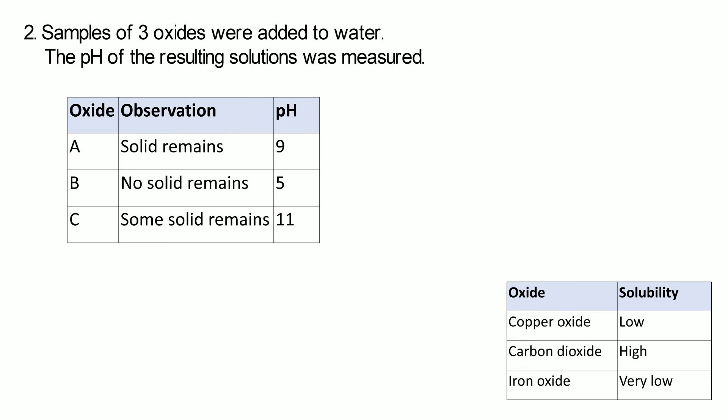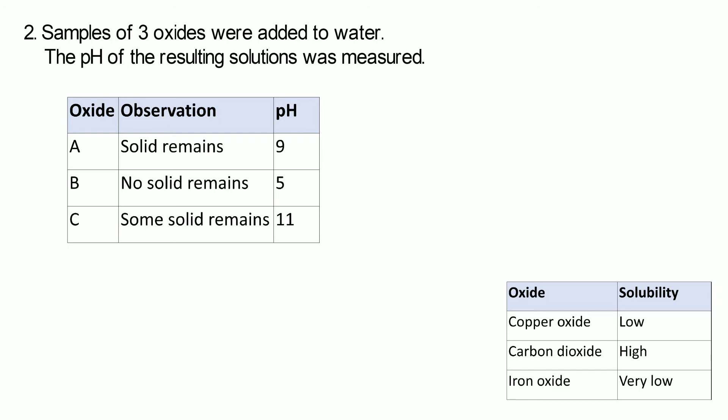So when they dissolved A in water some solid was left, low solubility, and it had a pH of 9. B, no solid was left, it dissolved completely, and it formed a solution with a pH of 5. And C, some solid was left, so it's not completely insoluble, and the pH was 11.